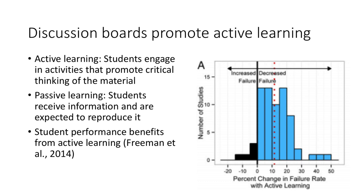Student learning is generally categorized in one of two ways: active and passive. In active learning, students engage in activities that promote critical thinking of the material. In contrast, in passive learning, students receive information and are expected to reproduce it.